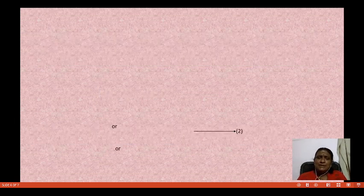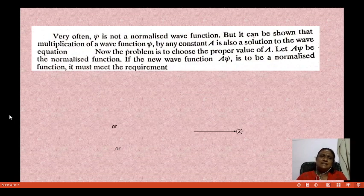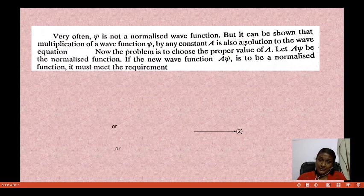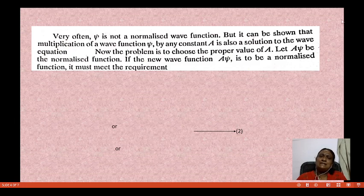Now, we are talking about a normalized function. For example, if psi is not a normalized wave function, however, psi can be made normalized. It can be shown that multiplication of the wave function psi by any constant A — whether A, B, or any constant — will give a normalized function. By multiplying by any constant A, it is also a solution to the wave equation.